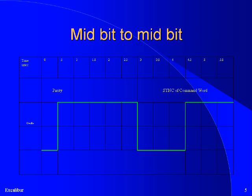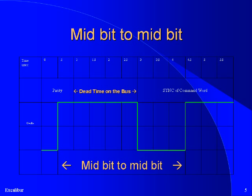There is often confusion when measuring timing in 1553. This is partly because the terminology changed between Rev A and Rev B of the spec. Rev A measured dead time on the bus, whereas Rev B measures mid-bit to mid-bit. Two microseconds of dead time are equal to 4 microseconds of mid-bit to mid-bit. The reason the terminology changed was that mid-bit to mid-bit is easier to measure on an oscilloscope.